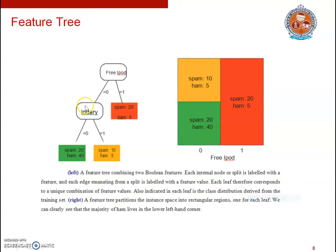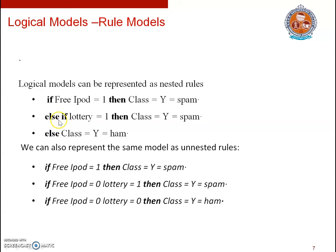In the second branch: else if 'free ipod' is not present, we check whether 'lottery' is present. If lottery is present, we go to the middle leaf where the majority class is spam. So in this else-if: if free ipod is 0 and lottery is 1, then class is spam. Otherwise, the class is ham. These types of rules are called nested rules. We can also create rule models using unnested rules. These three rules correspond to the unnested rules generated from the feature tree discussed earlier.